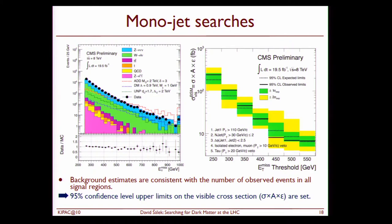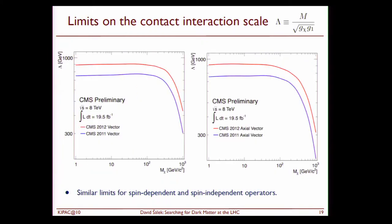We have to say that there is no signal found and at the 95% confidence level we can actually provide the limits on sigma times cross-section times efficiency. So this is basically what we do and now we also can interpret these results in terms of WIMP contact interactions. What you can see here is the limit on the contact interaction scale as a function of WIMP mass. The limit of this scale are very similar for both vector and axial vector operators and it's about 1 TeV.